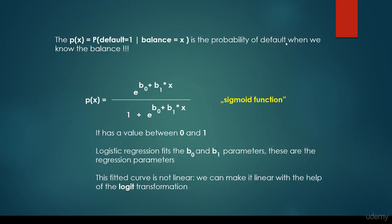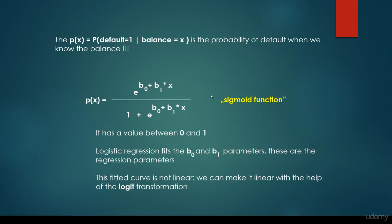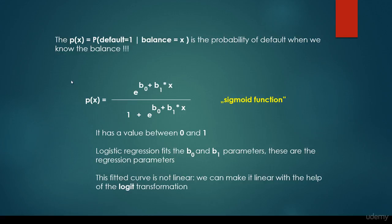So we would like the probability of defaulting when the balance is equal to a given amount — the probability of default when we know the balance. And this can be calculated by this formula: E to the power of B₀ plus B₁ times X, divided by 1 plus E to the power of B₀ plus B₁ times X, where X is the amount of credit on the credit card — a thousand dollars, a hundred dollars, and so on. This is the so-called sigmoid function, and this function is going to work better, constructed with this formula.